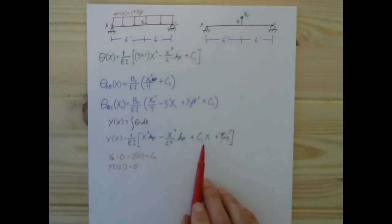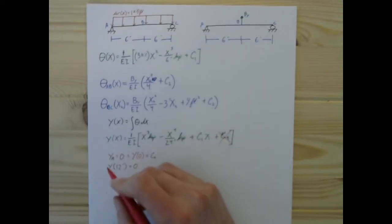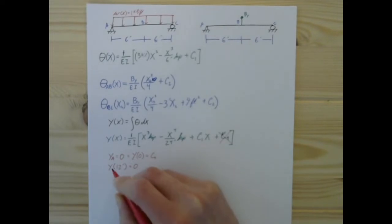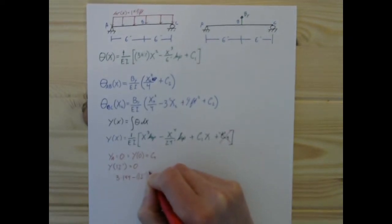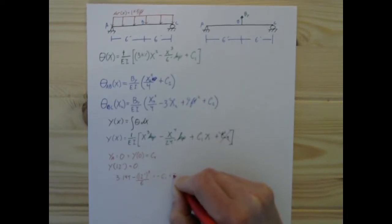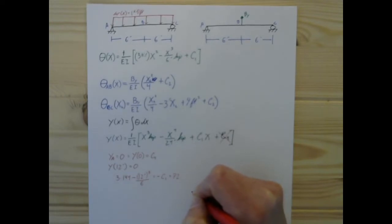So that gives us that C1, if we punch all of this in, we're going to have 3 times 144 square feet minus, and that's just 12 feet cubed over 6 equals negative C1 equals 72.